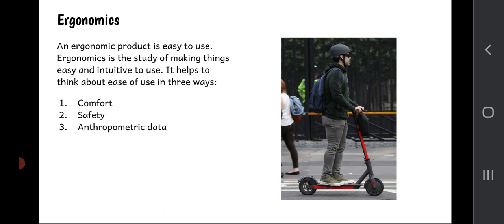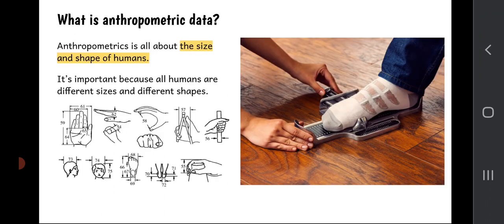So let's go back. Anthropometric data - what is that? Anthropometrics is all about the size and shape of humans, because after all every human in the world has a different size and different shape. The manufacturers of shoes and trainers know this because they have to sell shoes and trainers in all different sizes, so that everyone from a toddler to a massive basketball player can fit into a pair of Nike or Adidas trainers.